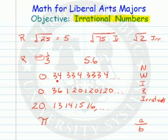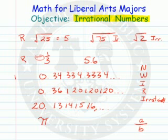0.34, 3, 3, 4, 3, 4, 3, 3, 4 — and if you notice, there is no pattern developing. There is no repeating block of numbers. Irrational number.